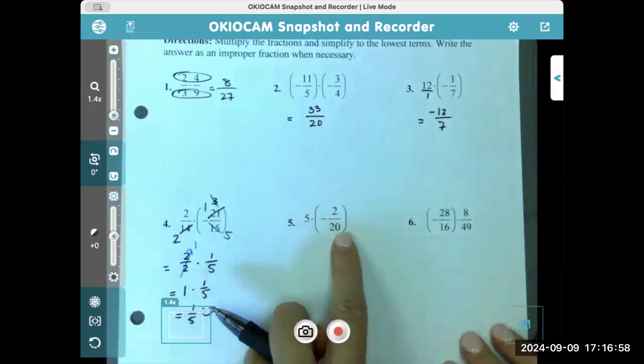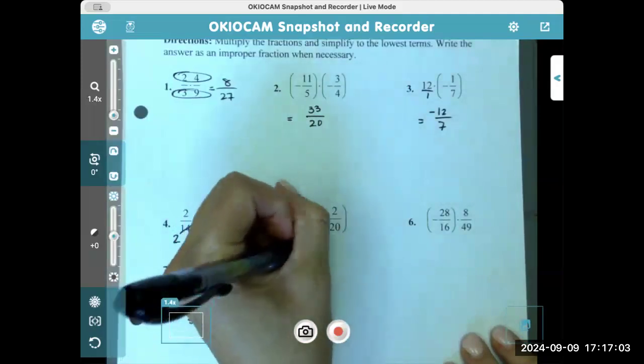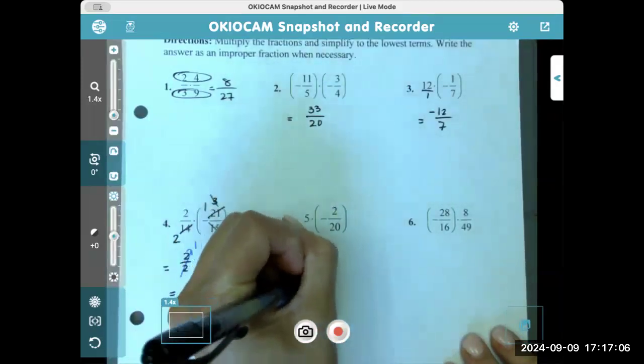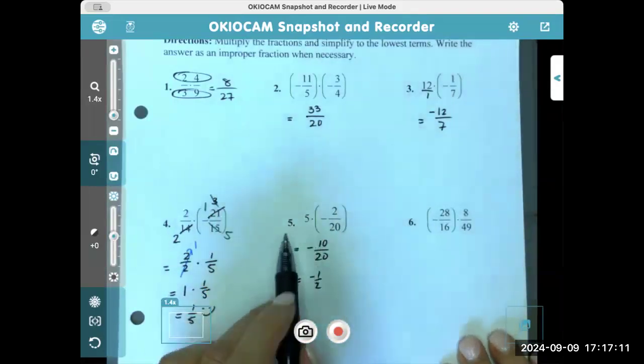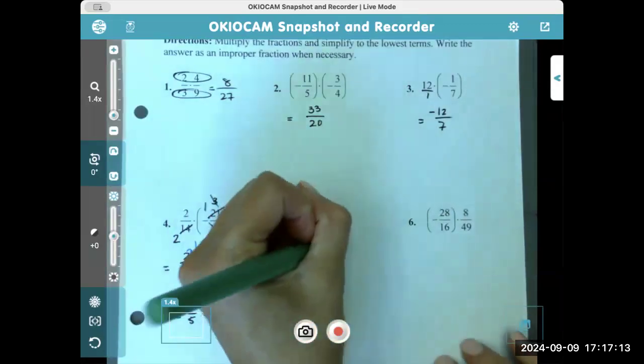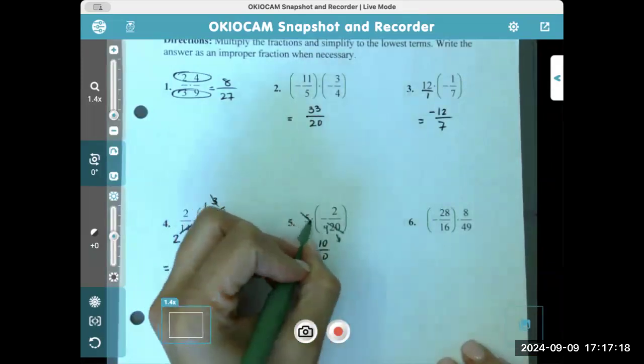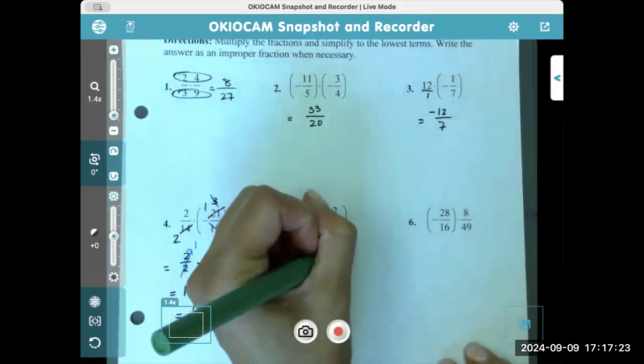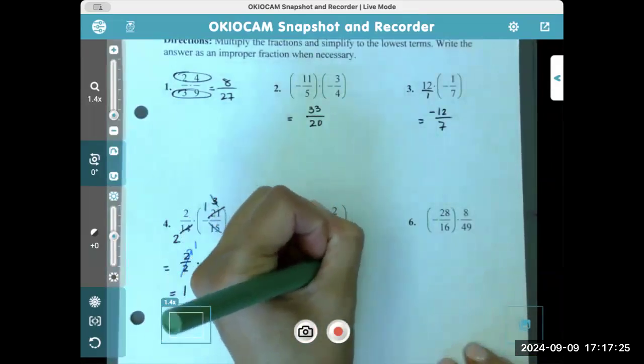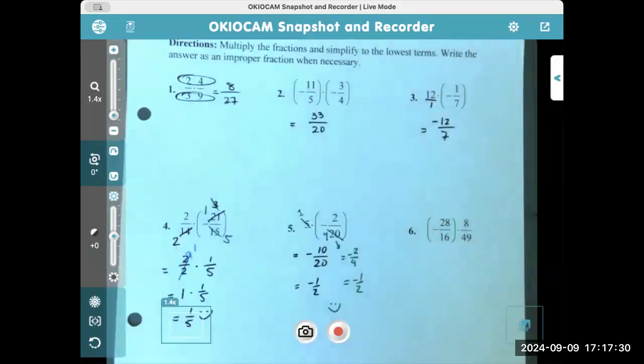Here, we could even do the same. We could say that it is negative five times two, which is 10 over 20, or negative one half when we simplify, right, because 10 can go into 20 twice. Or say, okay, well, five goes into 20 four times. So this becomes the one. So this is then negative two fourths, which is also negative one half. So either way, totally fine, doesn't matter. Does not matter at all.